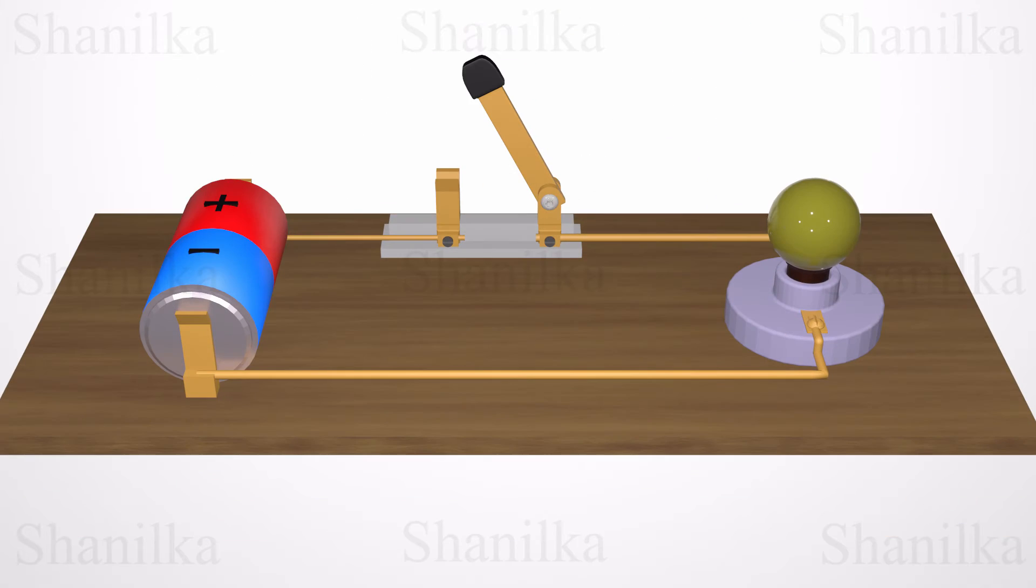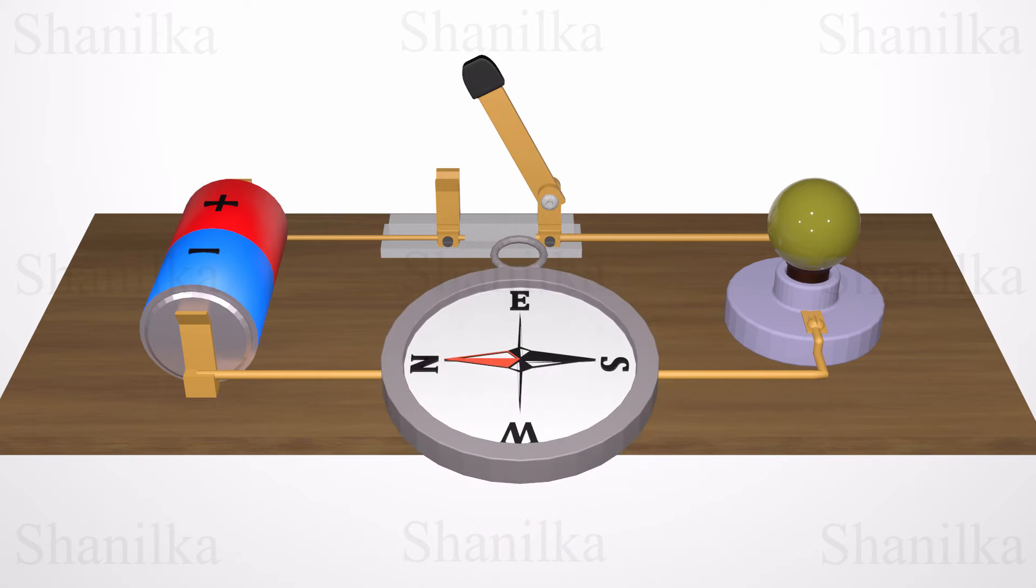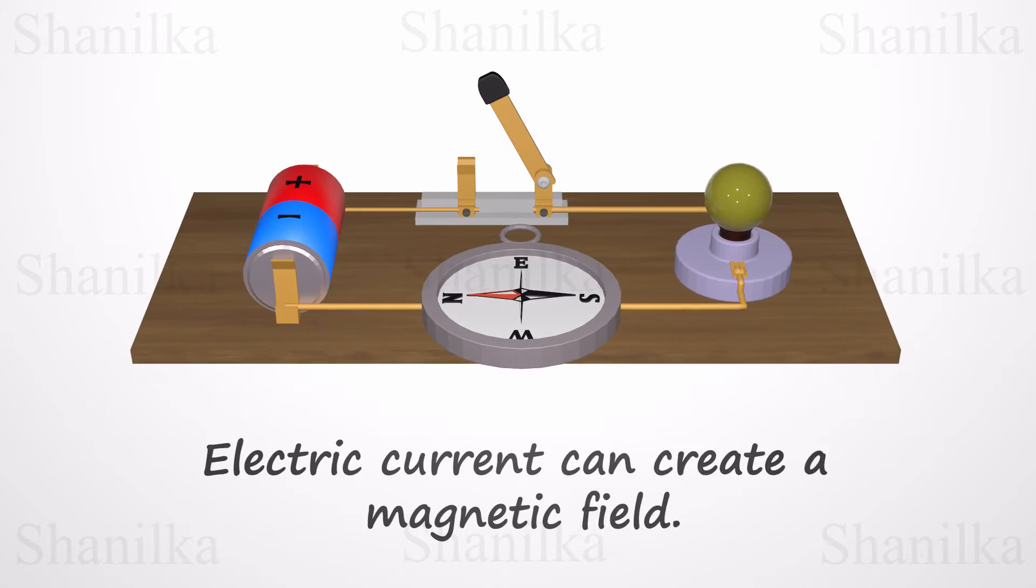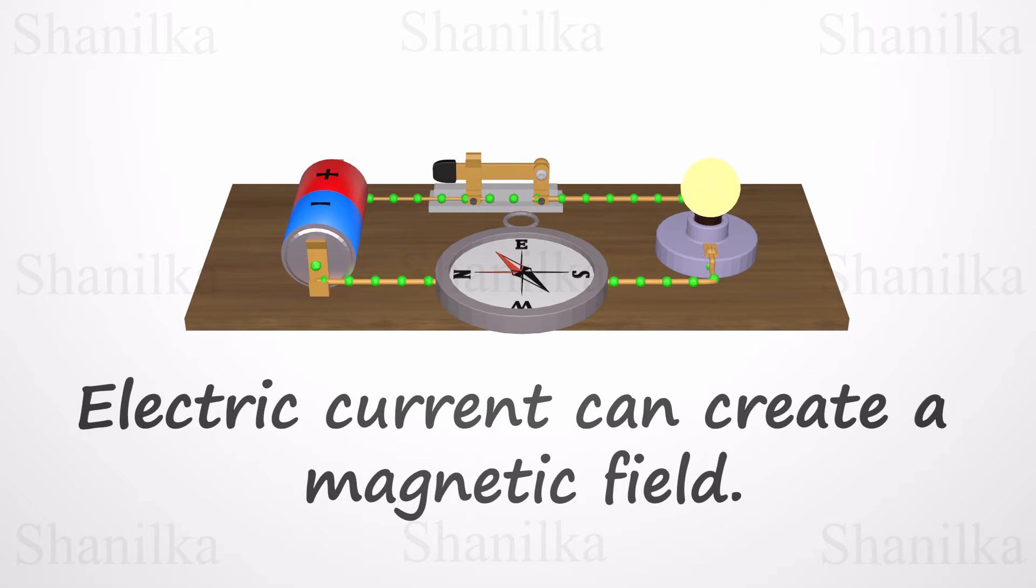In 1820, Danish natural philosopher Hans Christian Ørsted noticed that when he turned on an electric current by connecting the wire to both ends of the battery, a nearby compass needle deflected away from magnetic north, where it normally pointed. He discovered that a current-carrying conductor produces a magnetic field around it. This suggested a relationship between the moving electric charge and the magnetic field. This phenomenon is called electromagnetism.